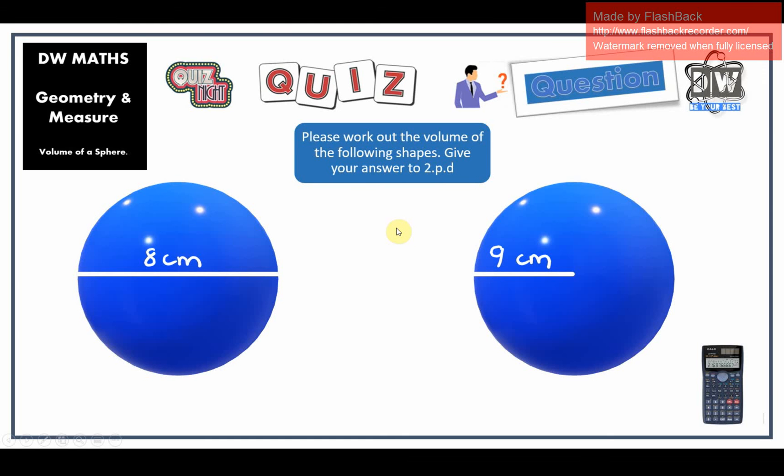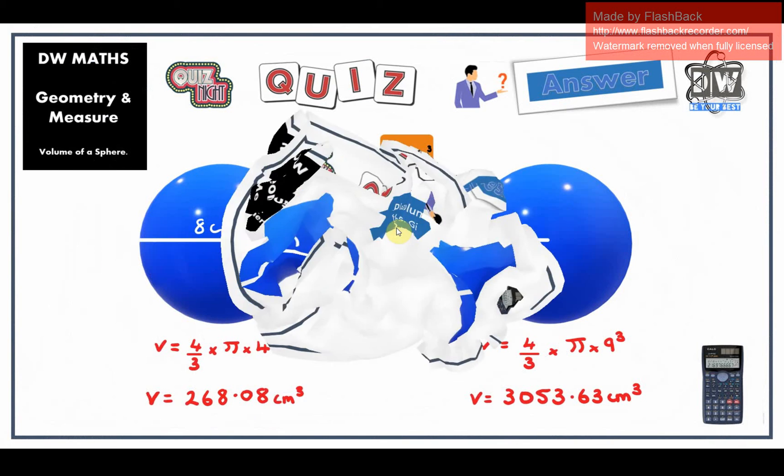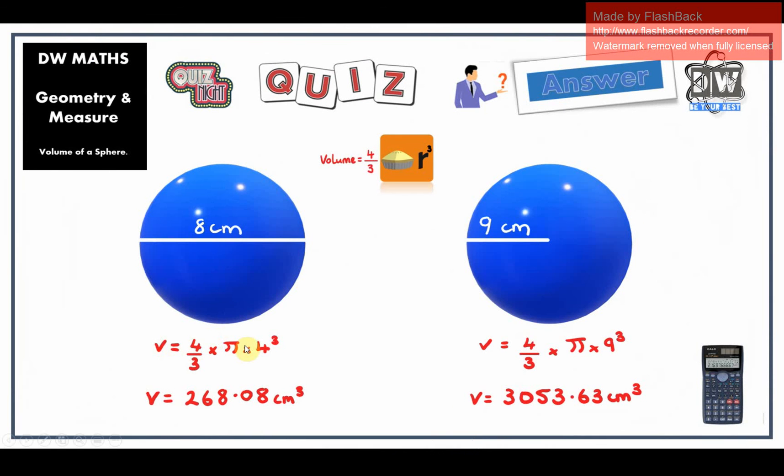Okay here we go. Let's see if you've got them correct. So firstly we popped in our four cubed because it was half of eight, and we got our volume of 268.08 centimeters cubed. On this one it is our radius so we're going to pop that in there, so we end up with 3053.63 centimeters cubed.